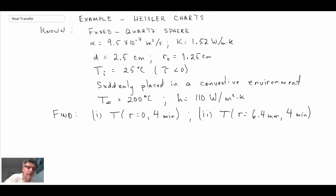Okay, so there's our problem statement. Fused quartz sphere, we're given the thermal diffusivity, thermal conductivity. We're told the diameter is 2.5 centimeters, we can get the radius from that. Initially it's at 25 degrees Celsius and then it's placed in a convective environment.